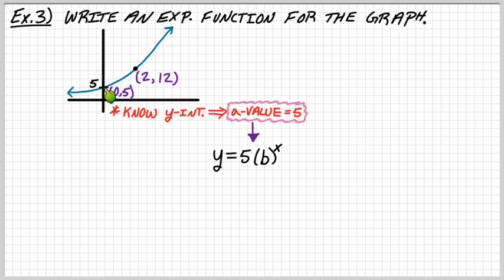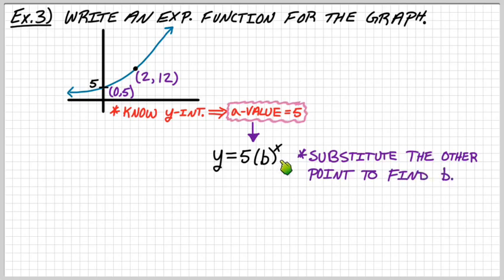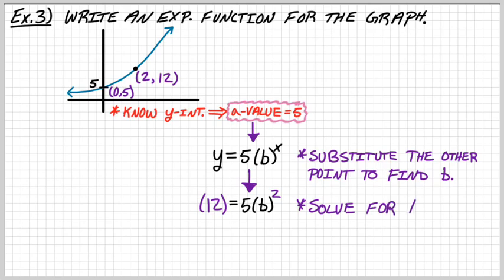So the a value is 5. The only thing left to do is solve for b, and we still haven't used the point (2, 12). Substitute that into the equation: 12 equals 5 times b squared. Divide both sides by 5 to get 12 over 5 equals b squared. Then take the square root of both sides to get b.